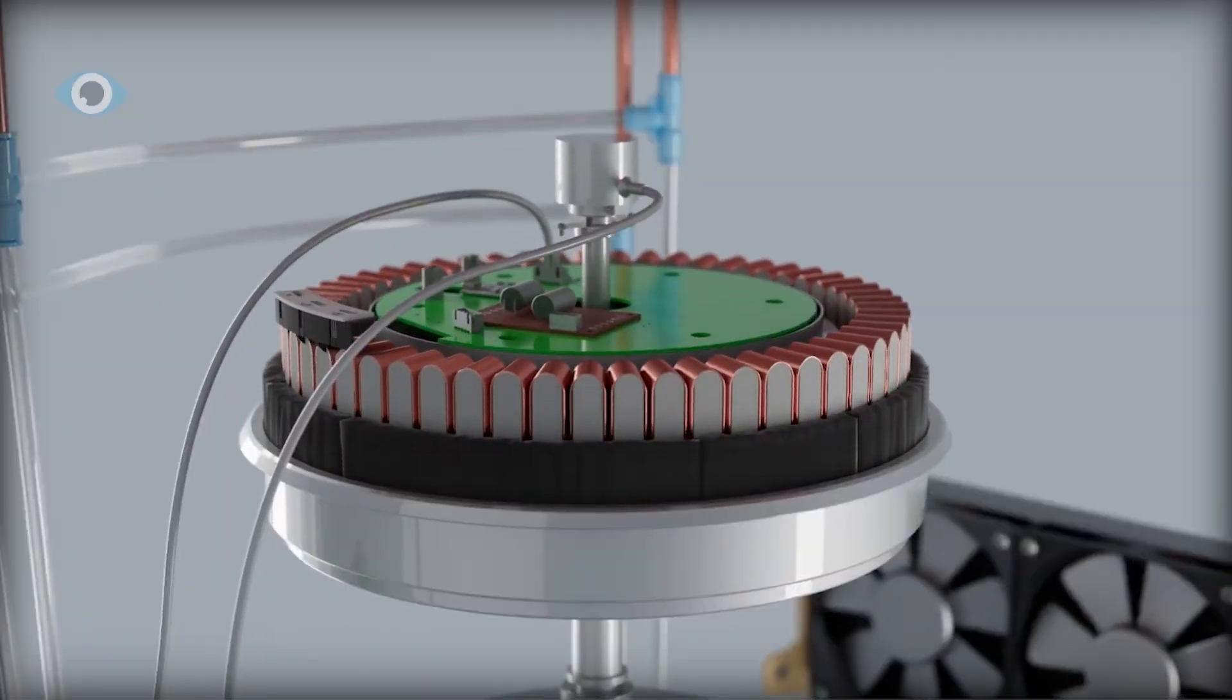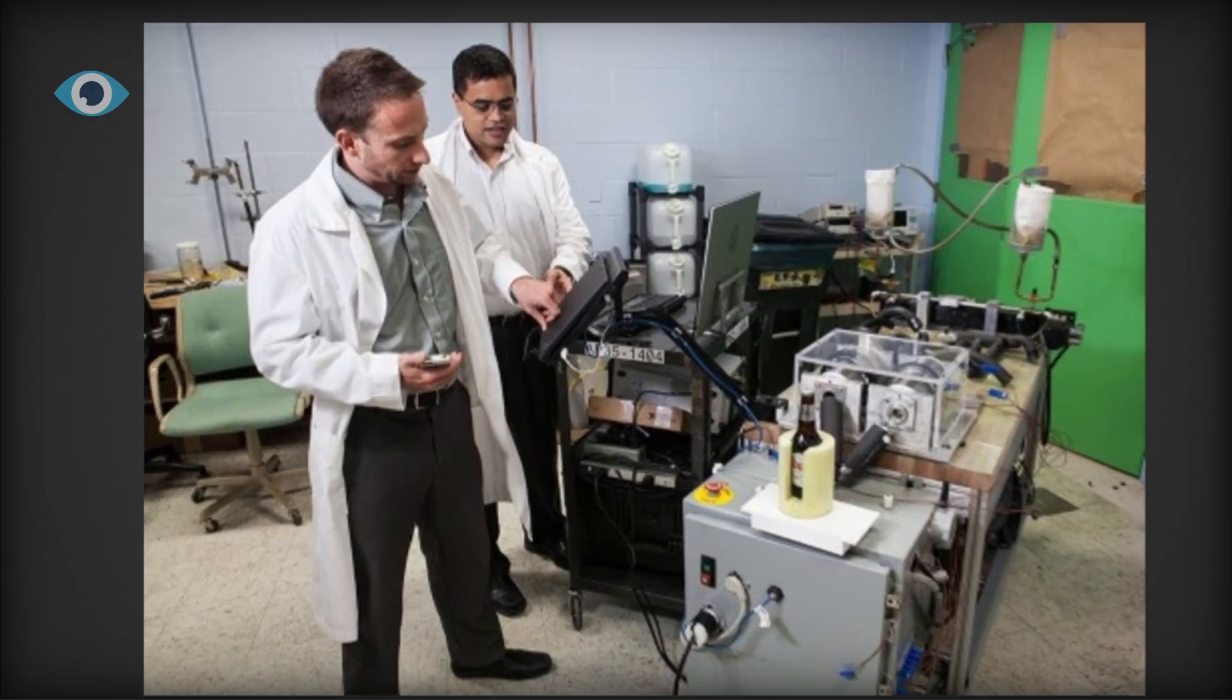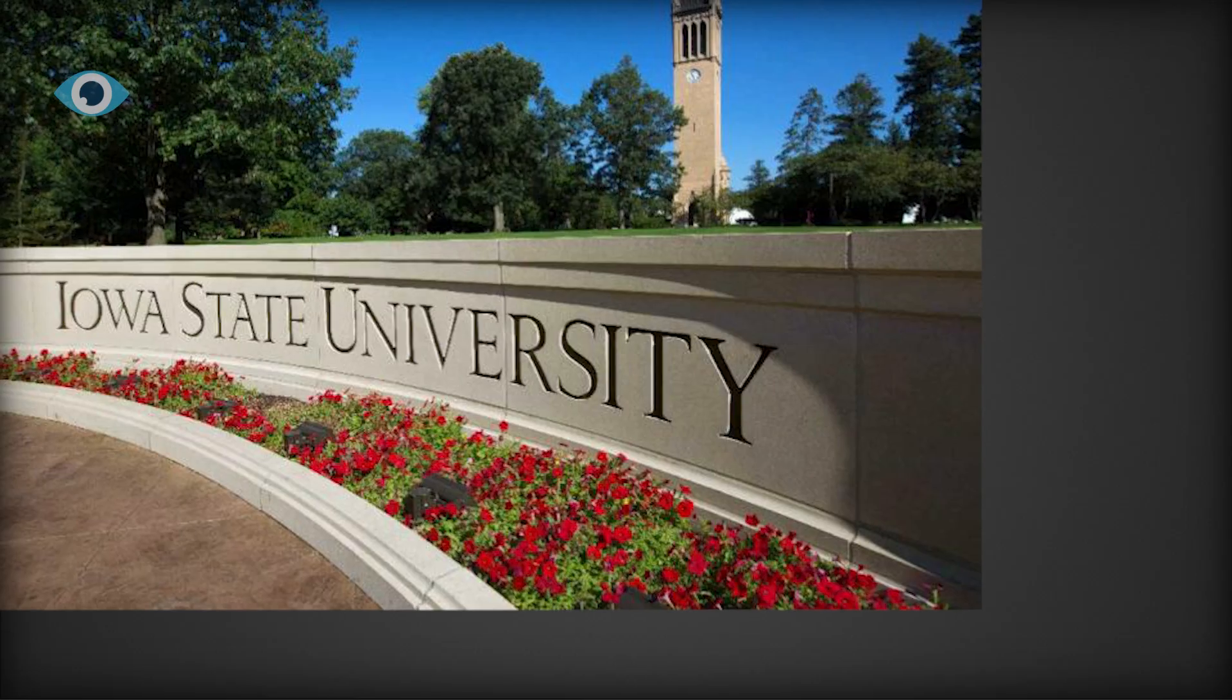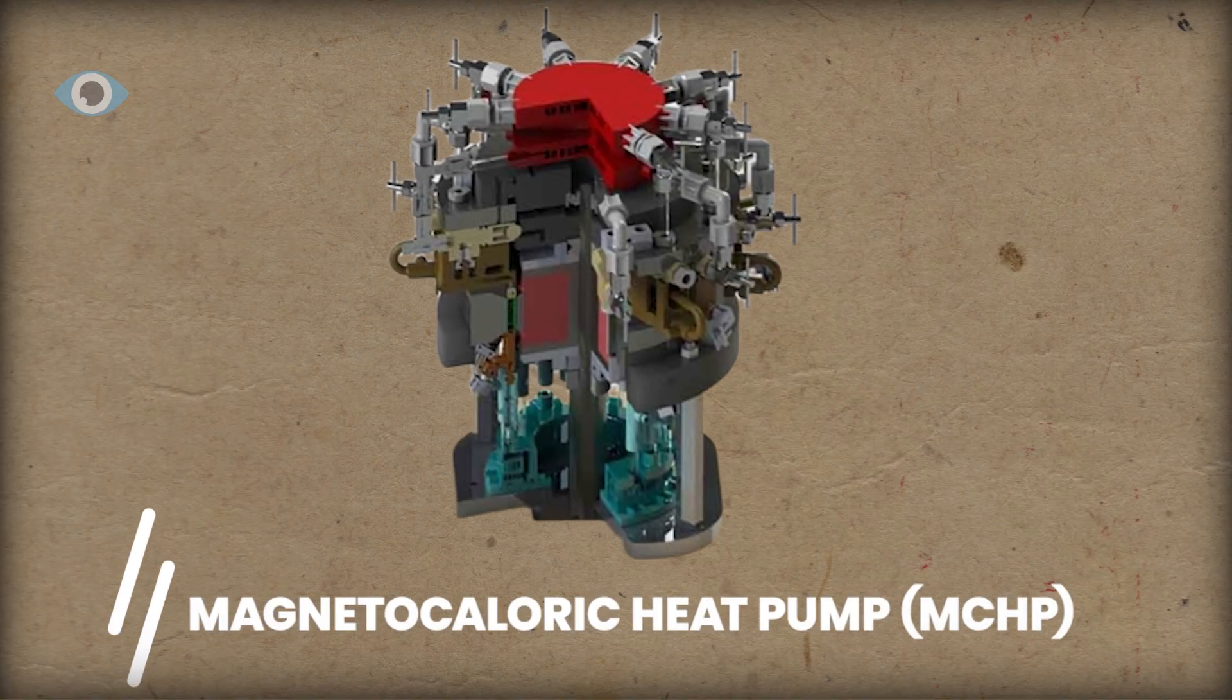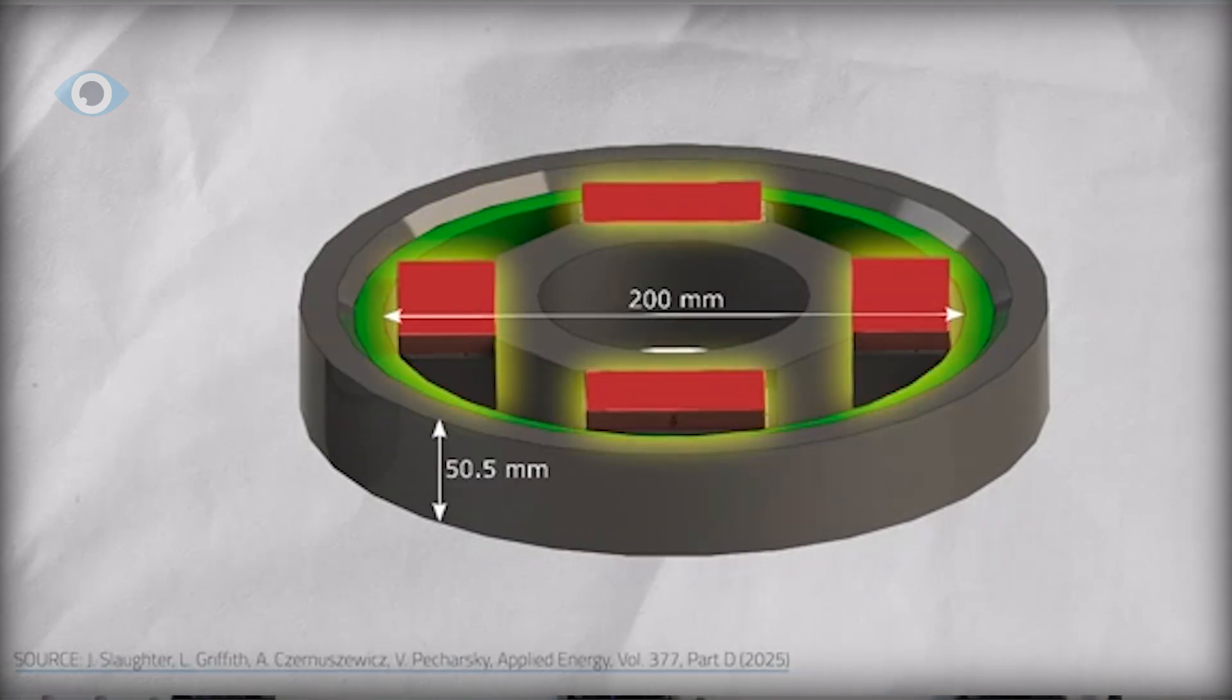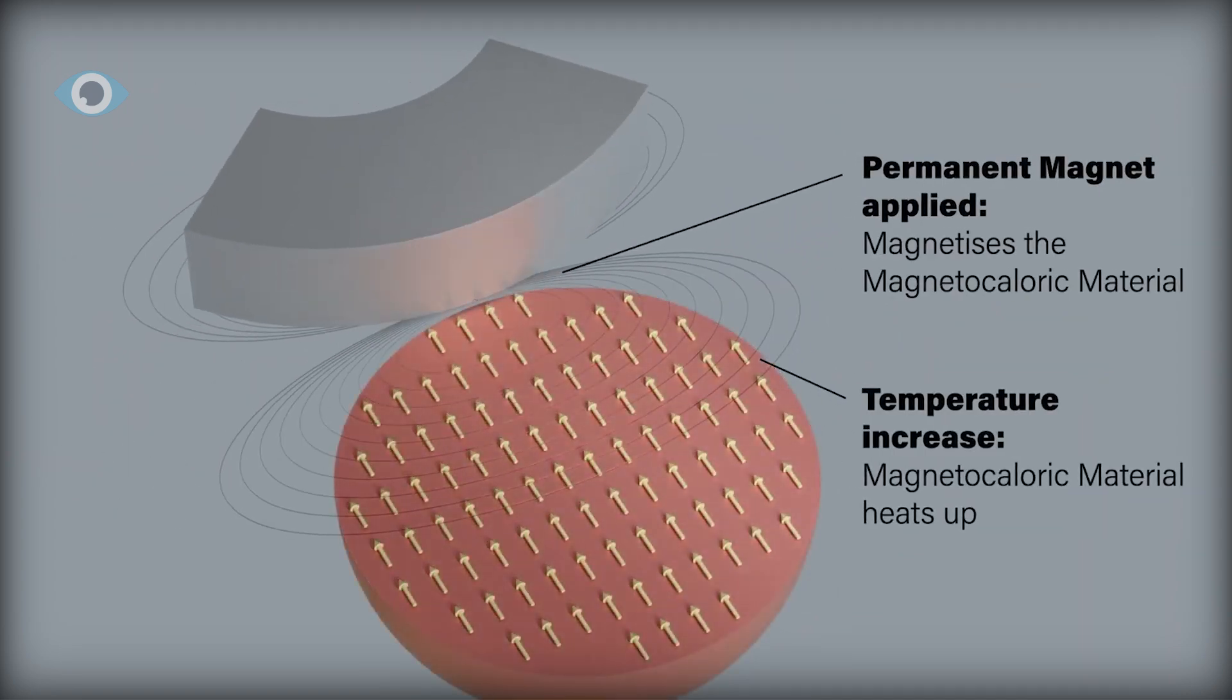One of the most advanced examples of this in action is a prototype developed by the U.S. Department of Energy in collaboration with Iowa State University. Their latest magnetocaloric heat pump, MCHP, uses a cylindrical housing with nine beds of gadolinium particles. Permanent magnets spin around this core, magnetizing each bed in turn, heating it up.